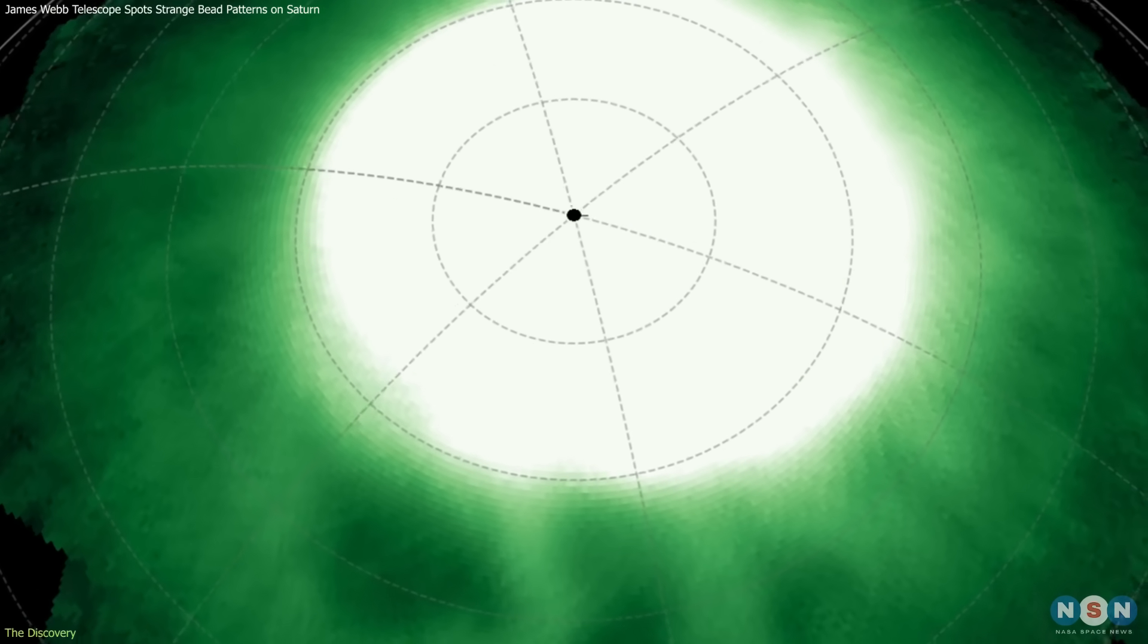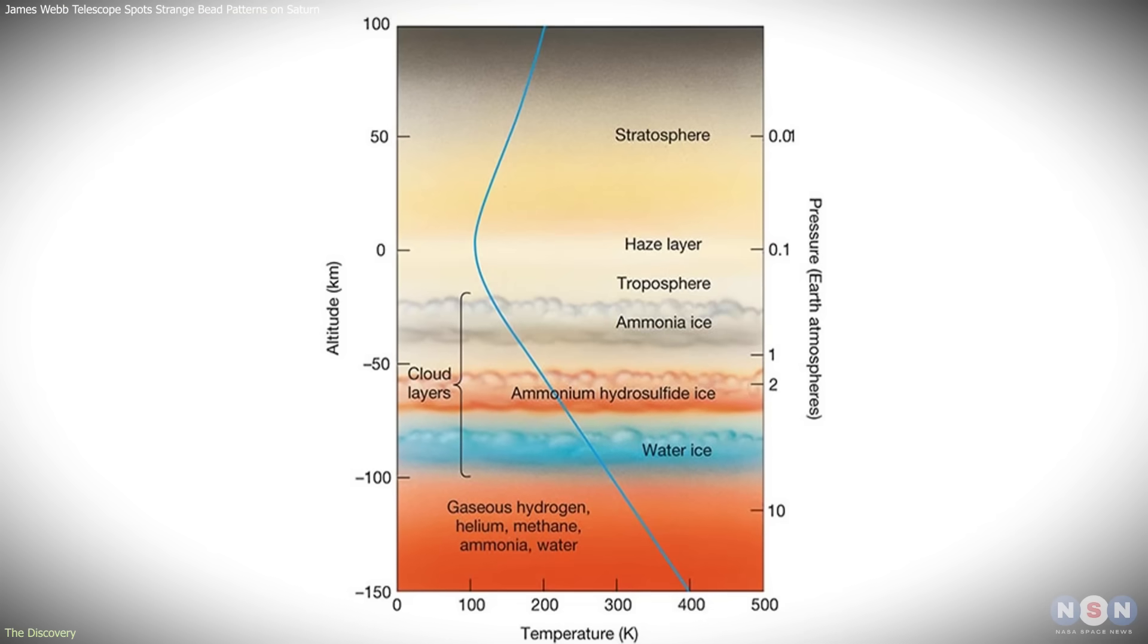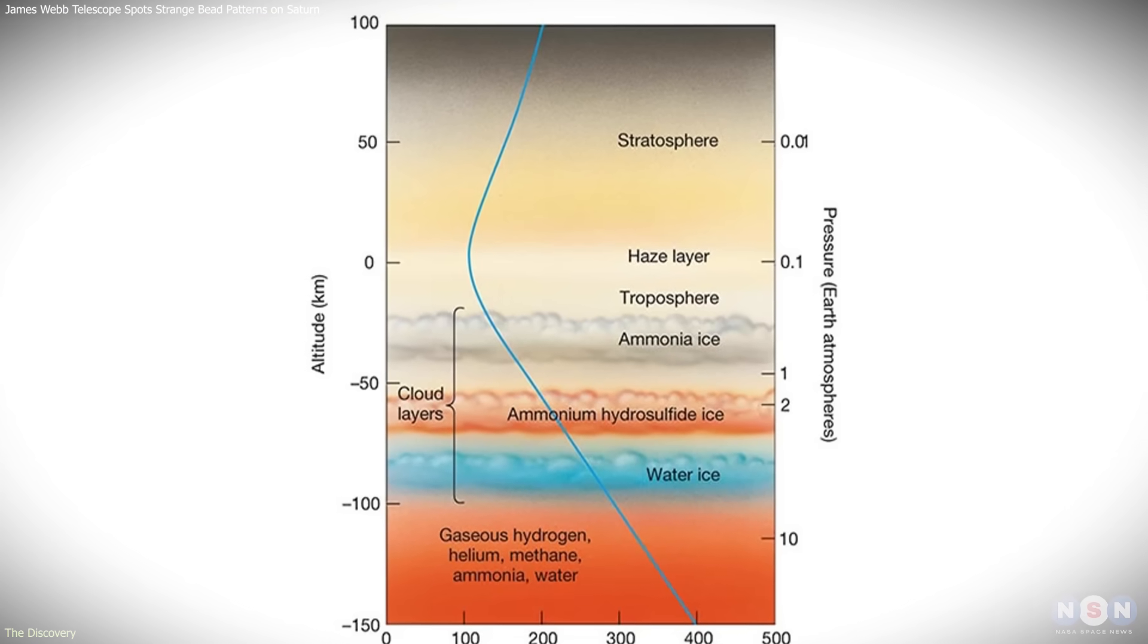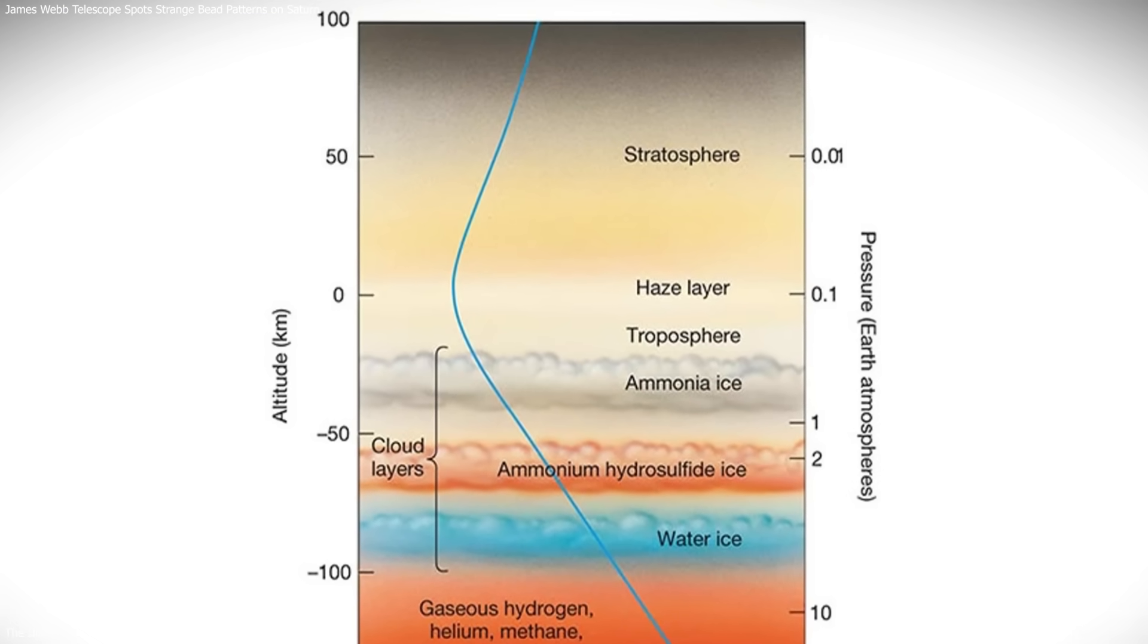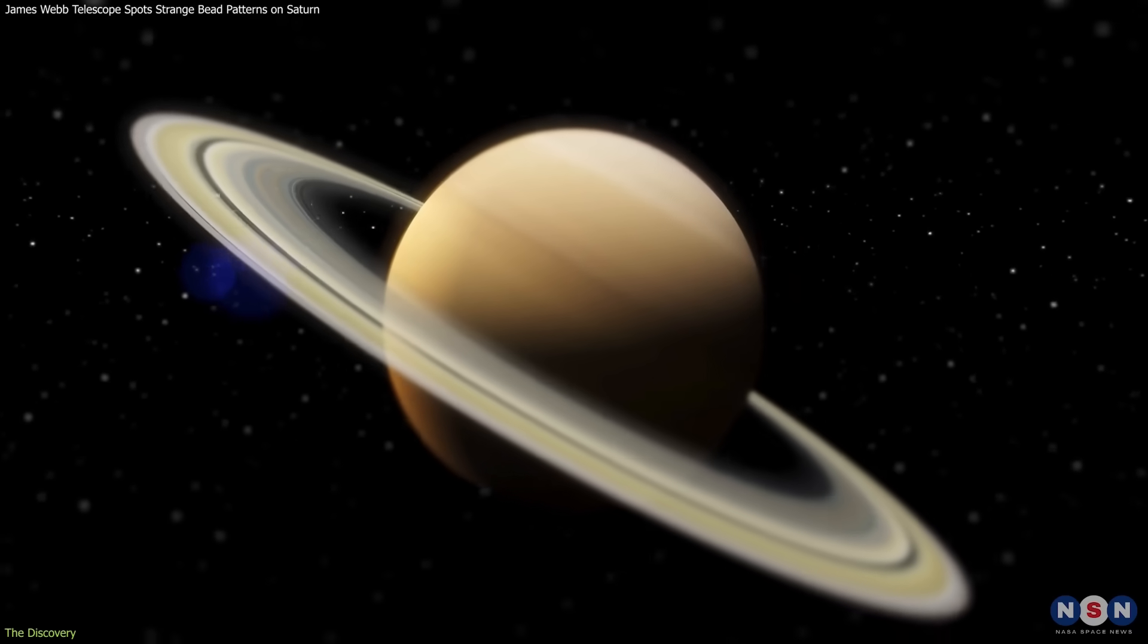The second target was the stratosphere, about 500 kilometers lower, where methane dominates the chemistry. The results were unlike anything researchers expected.